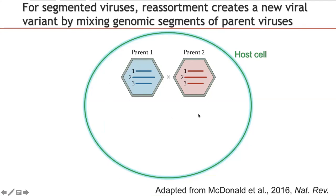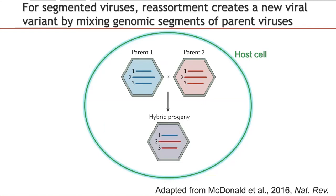Here you see two parent viruses with three segments each, co-infecting a single host cell. During the viral replication cycle, each of these three segments is replicated separately before being repackaged into a new viral particle. Since segments of both parent viruses are being replicated, they might mix during full genome assembly and thus create a new hybrid progeny.